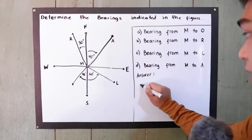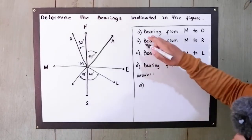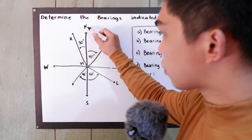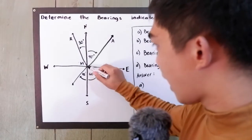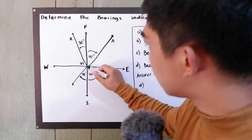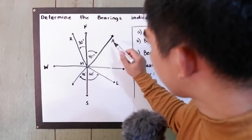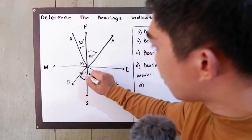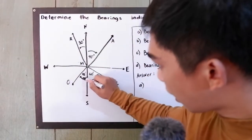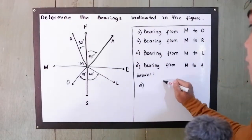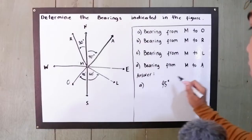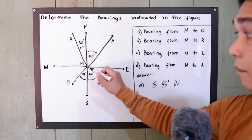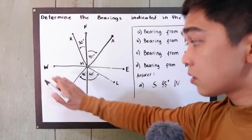Let's start with letter A: bearing from M to O. Locating M to O from our north-to-south line, that is 45 degrees west of south. So M to O is 45 degrees west of south.